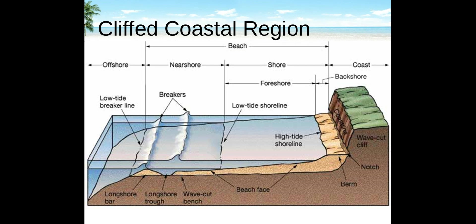Shoreline zones can be viewed by looking at the beach profile, which is divided into four primary zones: offshore, nearshore, foreshore, and backshore. The offshore is below any shoreline-derived process but is still geologically active due to cascading sands. The nearshore is affected by the waves — that's the part of the shore where the water is at half wavelength or less.